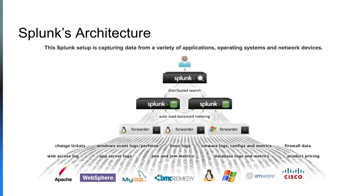The most common way to send data into Splunk is through a universal forwarder, which I'll call the UF. The UF is installed on each machine where you need to monitor files and directories. In the UF's configuration, you specify which data sources to monitor. The UF then continuously monitors the configured data source, and when new data is created or changes occur, it reads and forwards that data to the designated Splunk indexer. The indexer then parses, indexes, and stores the data in a format that makes it searchable. Once indexed, users can use Splunk's search head to search, analyze, and visualize the data using Splunk's search and reporting capability.